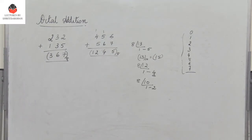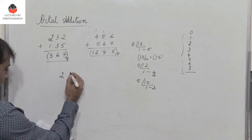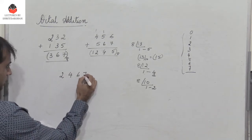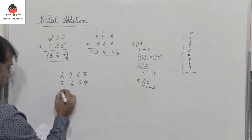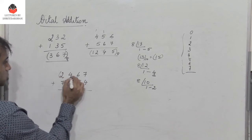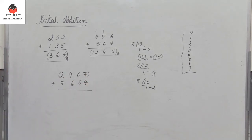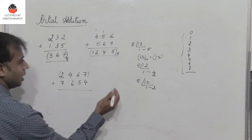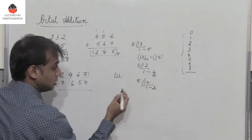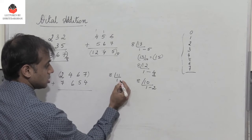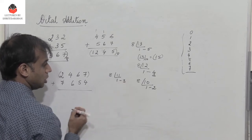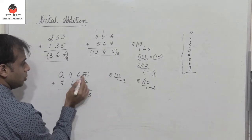Let's take another example. I have 2 4 6 7 and 7 6 5 4. These are octal numbers with digits from 0 to 7 only. 7 plus 4 is 11, which is greater than 7. Divide by 8: the octal representation is 1 3. So 3 with a 1 carry.